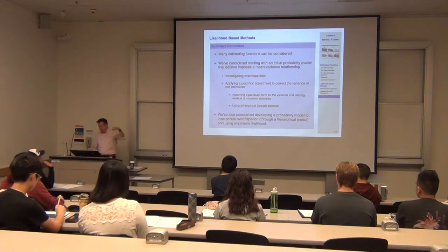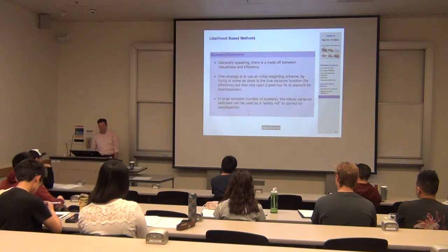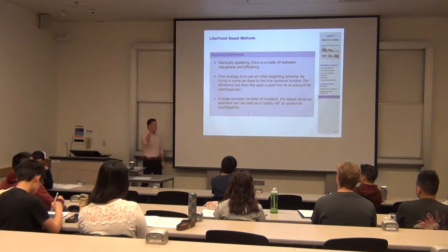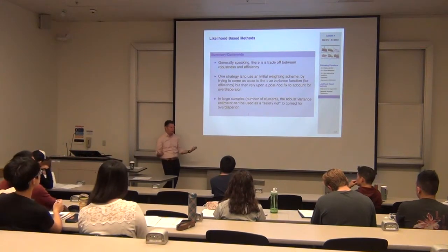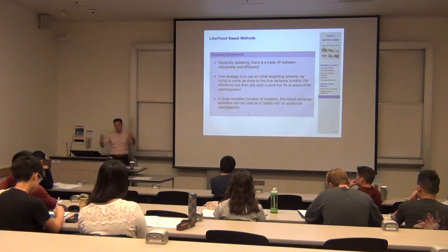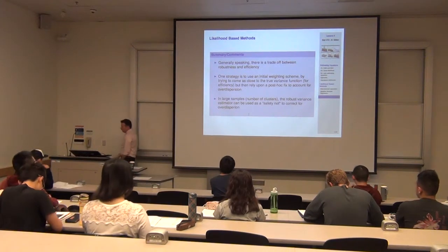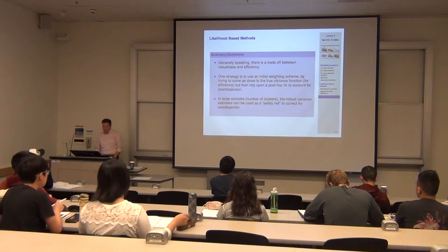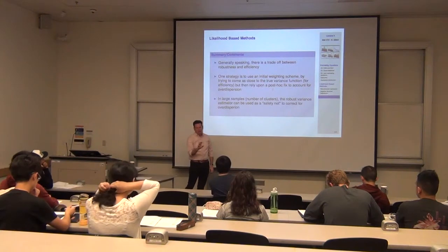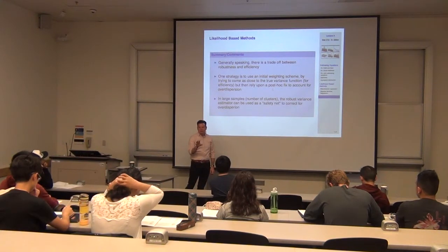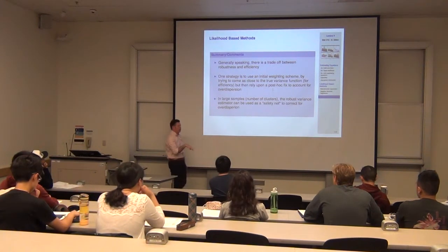We've talked about developing the probability model to incorporate over-dispersion, and also straight maximum likelihood. That was the beta-binomial model from this lecture; you also did a negative binomial on your homework. You can do the technique through a hierarchical formulation of the problem. The key idea with the initial weighting scheme is to come as close to the true variance as possible — you're doing that for efficiency — but if you don't have the exact correct variance, you've got to fix up the variance estimator at the end.